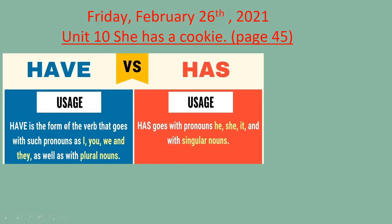'Have' is the form of the word that goes with pronouns such as I, you, we, and they, as well as with plural nouns. When we use 'have', we use it with plural nouns: I, you, we, and they. 'Has' goes with pronouns he, she, it, and with singular nouns. So if you see a singular noun, you need to use 'has', but if you use a plural noun you need to use 'have'.